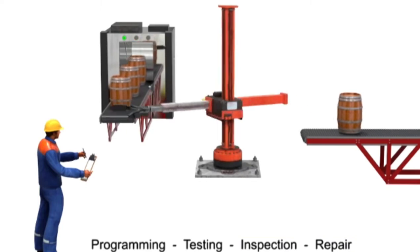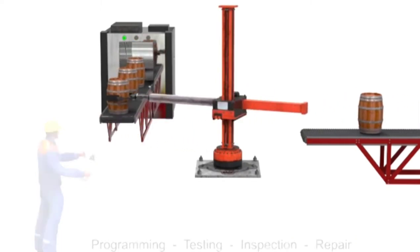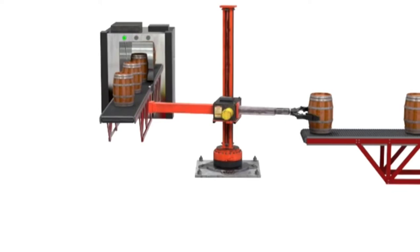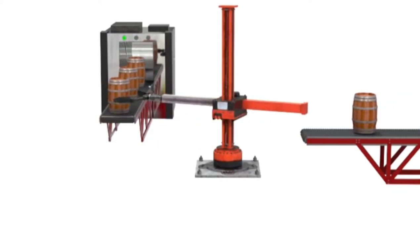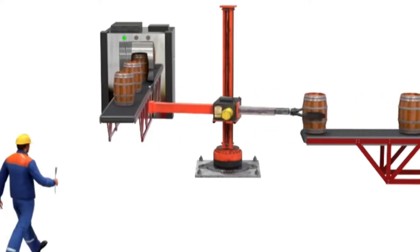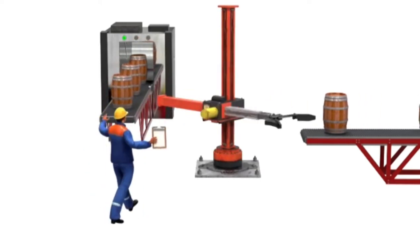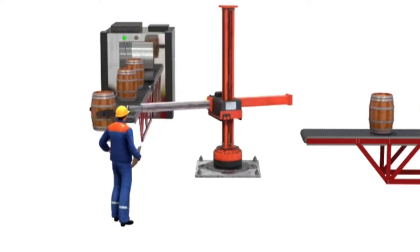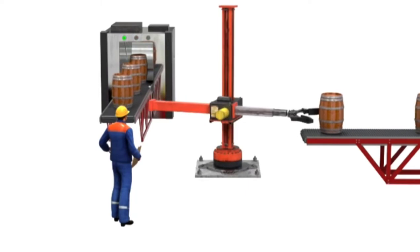By system design, robots rarely need human interaction during normal use and operation. But when programming, testing, inspection, or repair is required, humans are more likely to be in the robot's work area or work envelope.